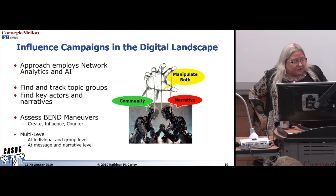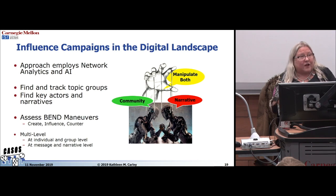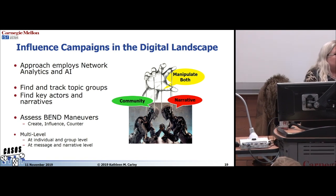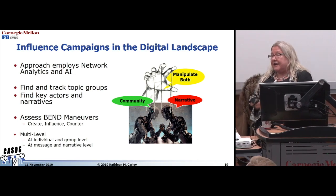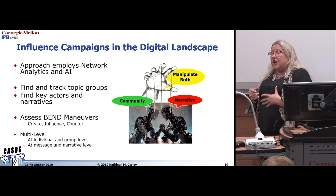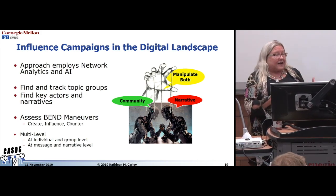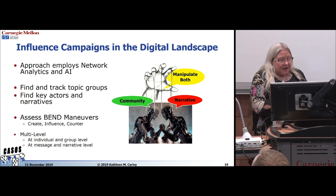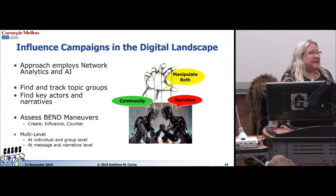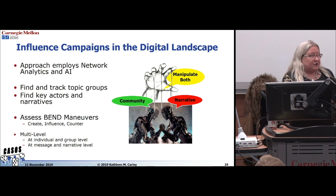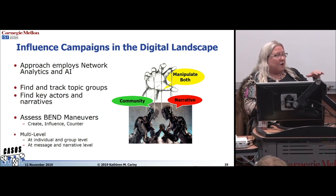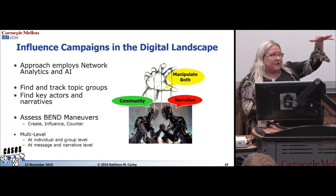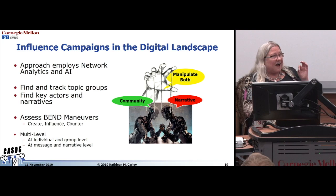We've developed a methodology to capture what's going on in influence campaigns and to develop countermeasures. The first part is understanding how the internet is organized around topic groups — groups of actors who talk to each other about more or less the same things. Once you find the topic groups, you find the key actors and key narratives. Then you identify the information maneuvers using the BEND framework. You need to analyze this at two levels: what is it doing to individuals, and what is it doing to groups, because there are always both short-term and long-term impacts.